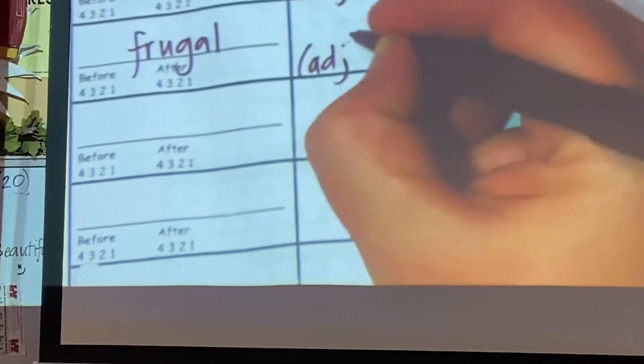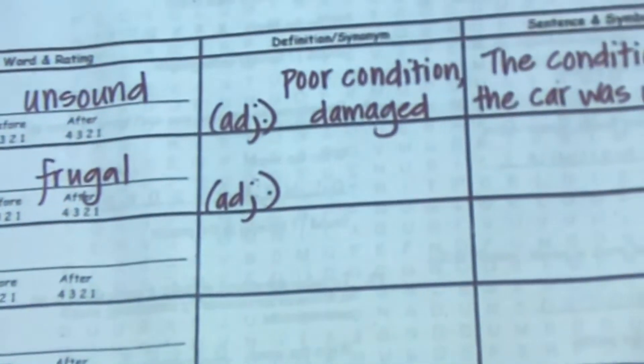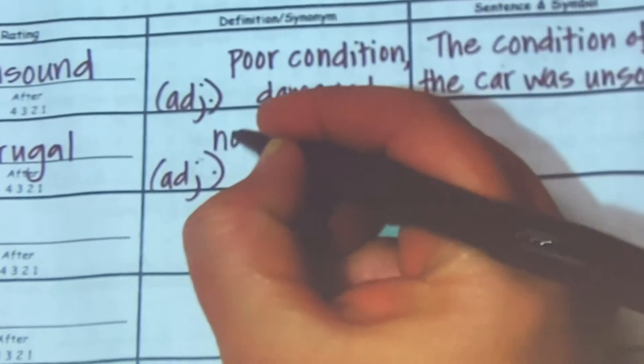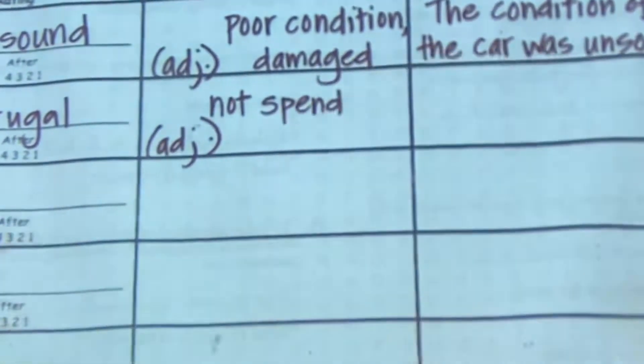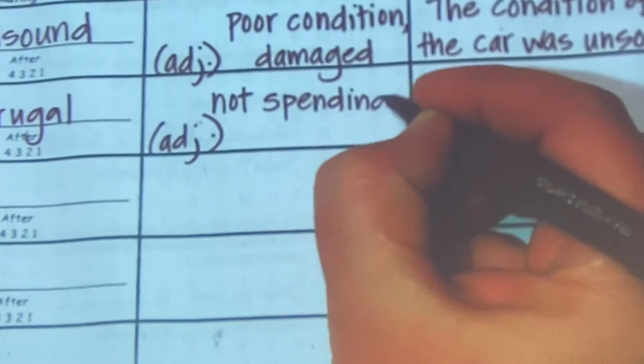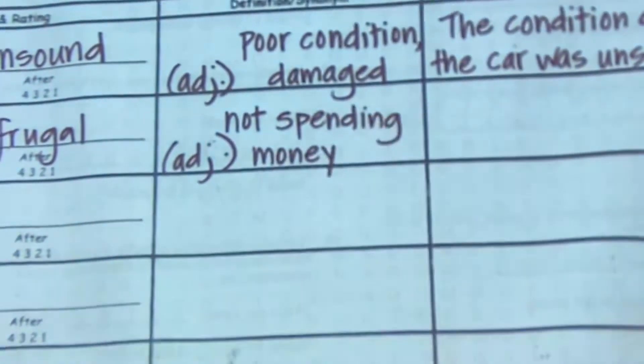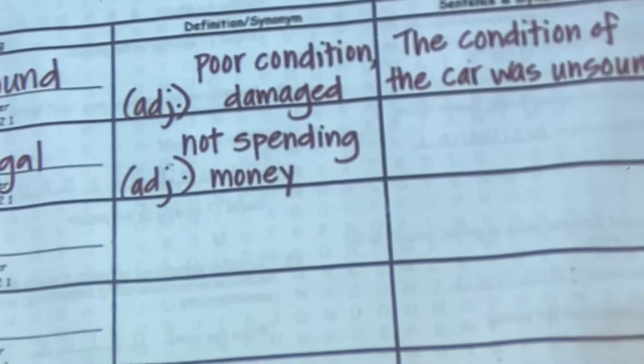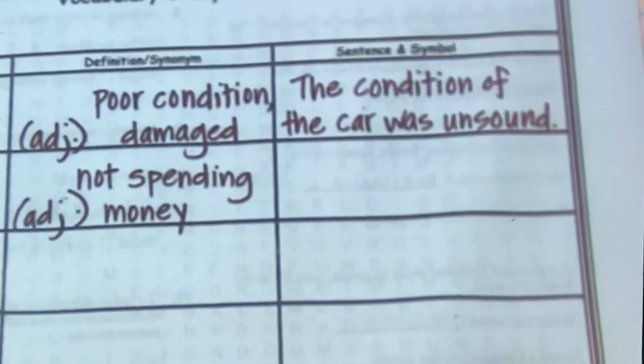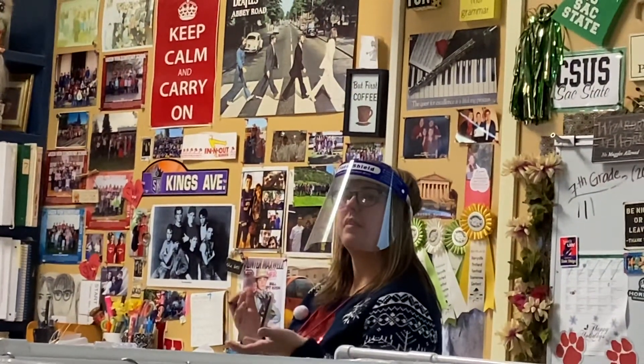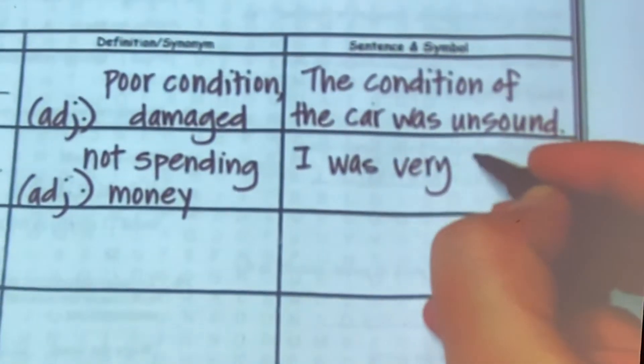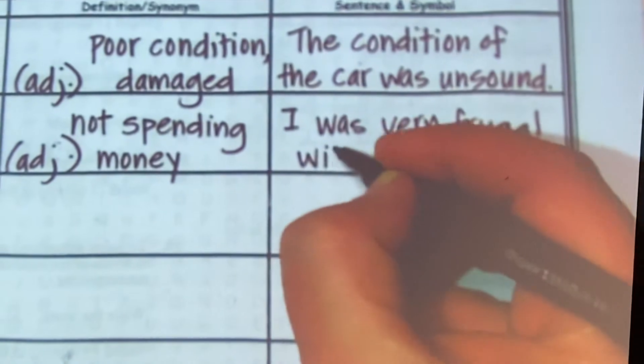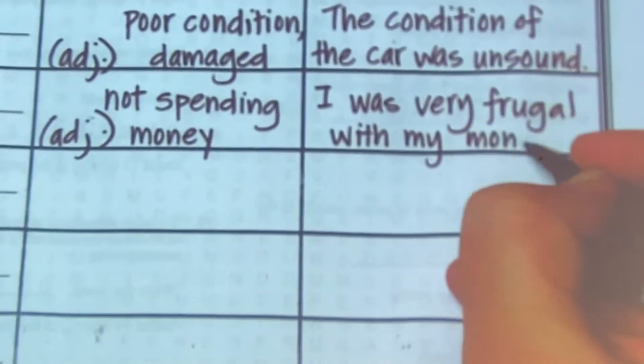It's an adjective. Not spending money. Cheap, you could say. Very careful or conservative with your spending habit. Somebody that has all those coupons and they're always looking for that deal, they are very frugal. Callum, can you do a sentence for frugal, please? I was very frugal with my money. Perfect.